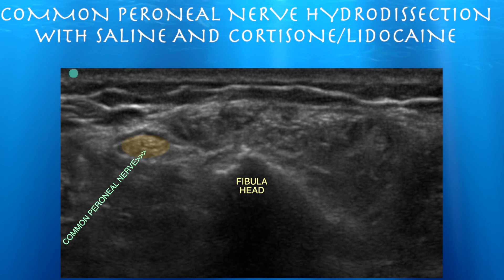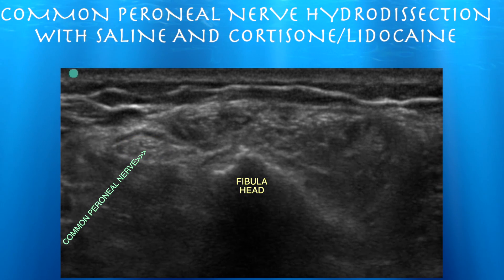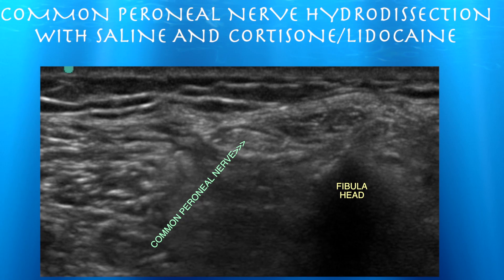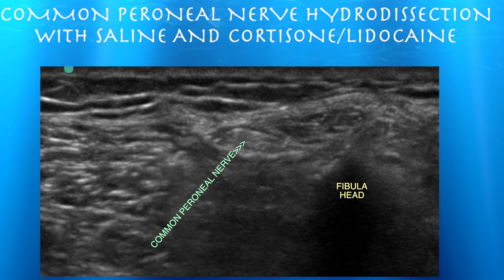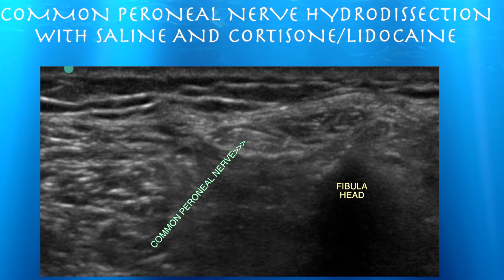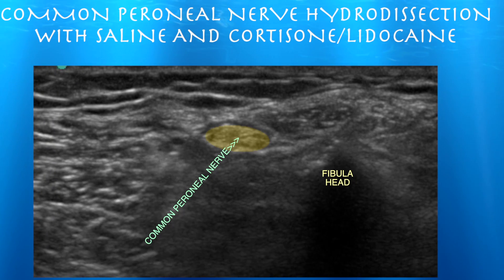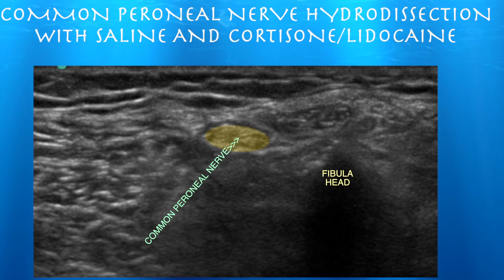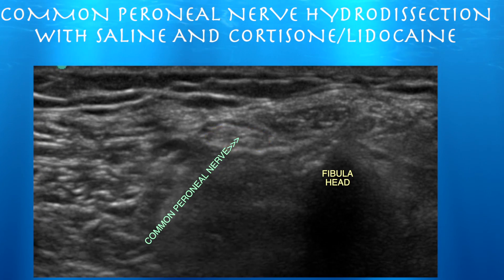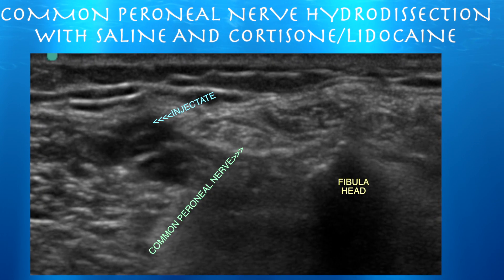This is a short-axis approach to the needle, so you're not going to see the needle — all you're going to see is movement of the tissue and the fluid that you inject. It really gives you a good sense of where exactly you are. You can see the fluid getting injected around the nerve, but we're not actually touching the nerve itself.